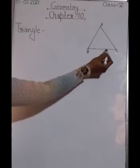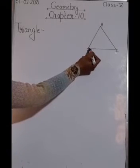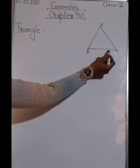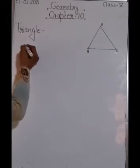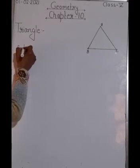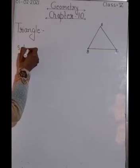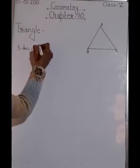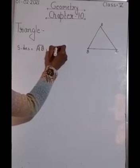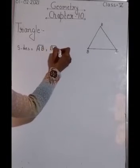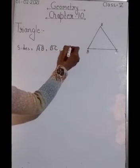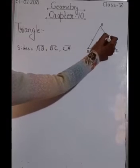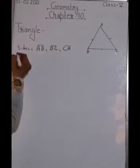I have drawn a triangle here. What is a triangle? A triangle is a polygon made up of three sides. The sides of this triangle are AB, BC, and CA. So it has three sides — these are the sides of a triangle.